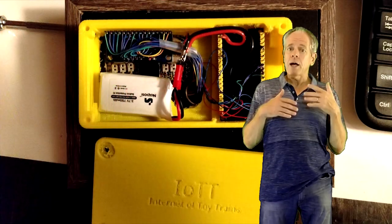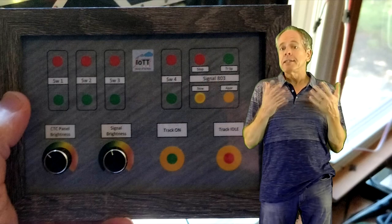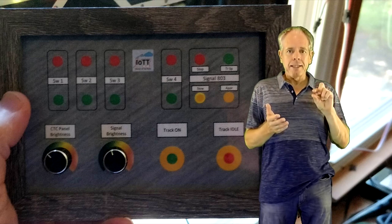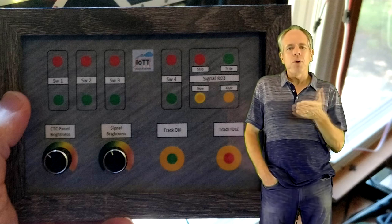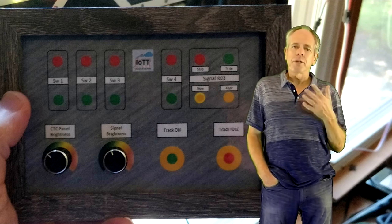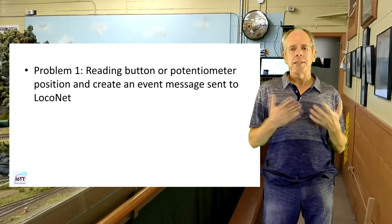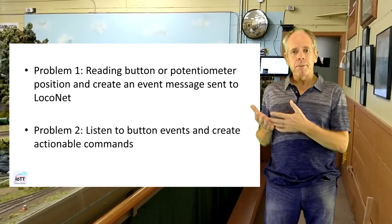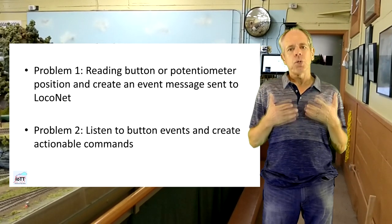I want to use this control panel as a wireless device from which I can control switches 1, 2, 3, 4, signal 803, and the brightness of the LEDs of my CTC panel and the signaling system. In addition I want an idle button to stop all trains in an emergency and a go button to restore power to the trains. In order to make the buttons work over LocoNet I had to solve two problems, which resulted in two new libraries downloadable from my GitHub page. The first problem is reading the status of the buttons and potentiometers and generating button event messages sent over LocoNet. The second problem is listening to those messages and creating action items for them, for example activating a switch or setting a signal aspect.